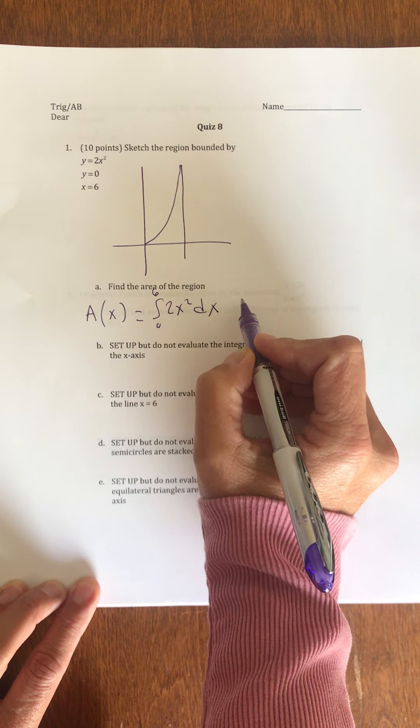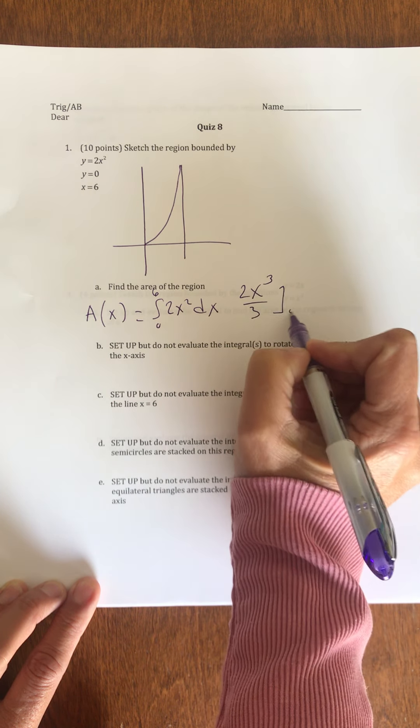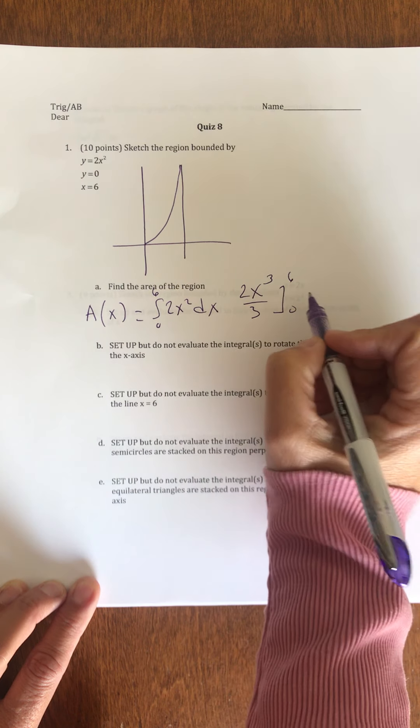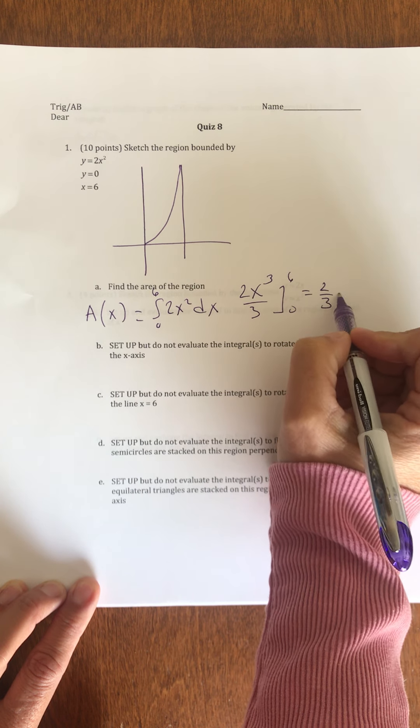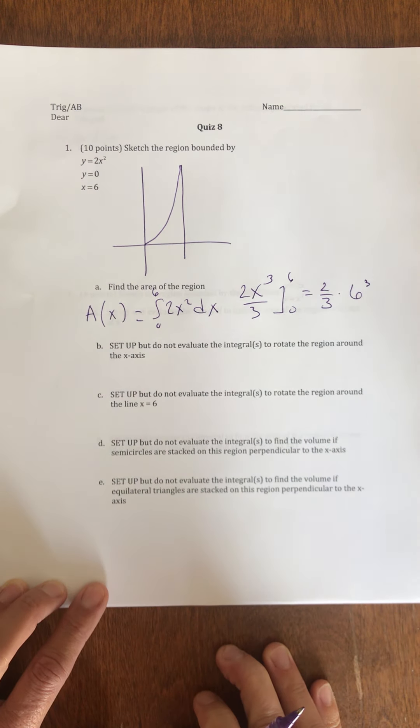Which is x cubed, 2x cubed over 3, evaluated from 0 to 6, which is 2 thirds times 6 cubed, and I don't have a calculator, so I don't know what that is off the top of my head.